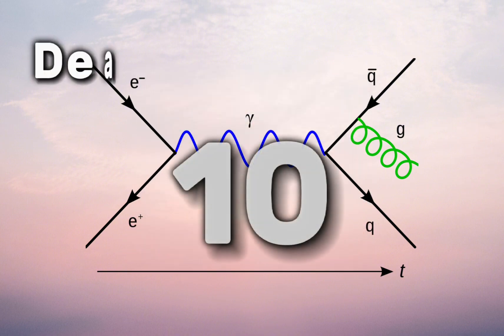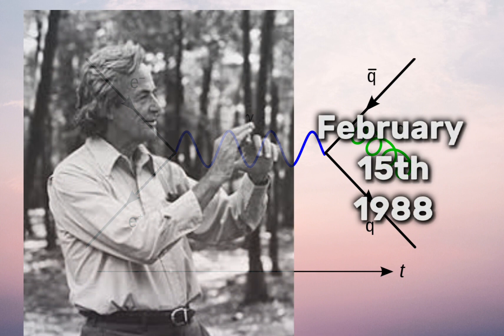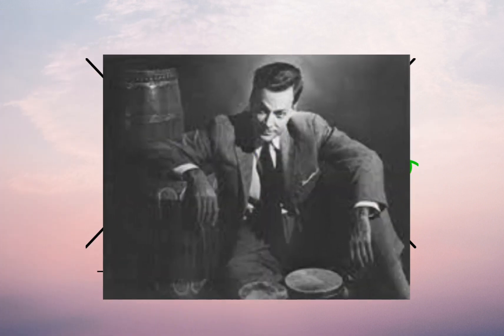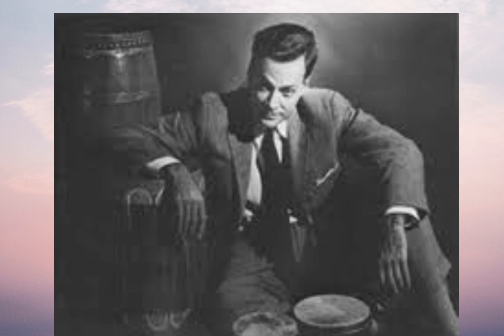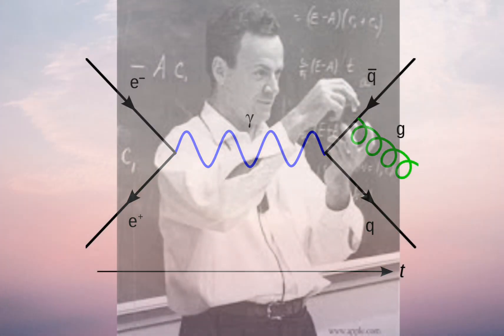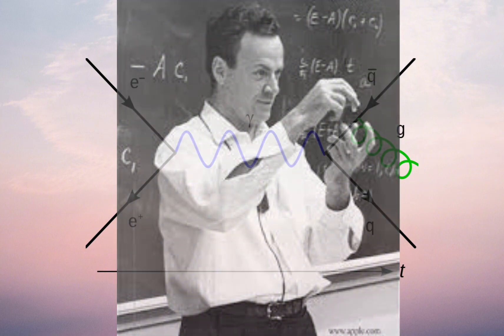10. Death and Legacy. Richard Feynman passed away in 1988 due to cancer. His legacy endures through his scientific breakthroughs, inspirational teaching, and popular science writings. He is remembered as one of the greatest physicists of the 20th century, known for his unique approach to problem-solving and his ability to make complex ideas accessible to a wide audience.